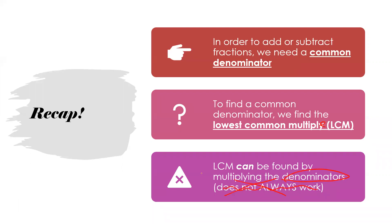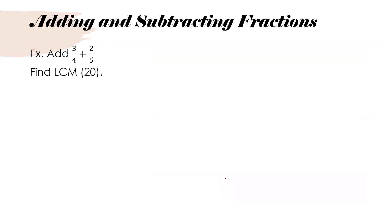In elementary school, you may have learned that multiplying the denominators is one way to find the lowest common multiple, but that doesn't always work out very well. A lot of times you can actually find a smaller one by simply finding a common factor and reducing it as much as you can. When you want to add or subtract fractions, you find the lowest common multiple. In our case, that rule does work to simply multiply four times five, giving a lowest common multiple of 20.